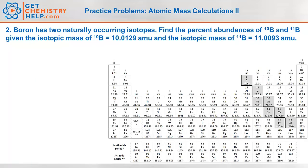So let's look at number two. Now number two says boron has two naturally occurring isotopes. Find the percent abundance of both boron-10 and boron-11, given the isotopic mass of boron-10 is 10.0129 AMU and the isotopic mass of boron-11 is 11.0093 AMU. Now in this case they don't give us either abundance, so we have to find both of the abundances.